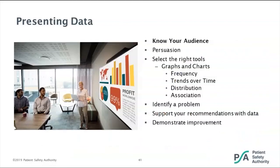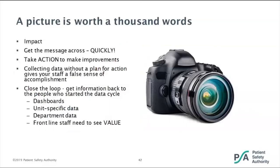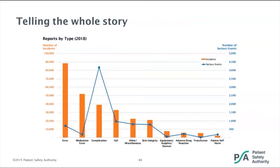When presenting your data, know your audience. Make it as simple as possible. What are you showing — frequency, changes over time, relationships? Explain what your problem is, what you're recommending to focus on, what changes you're recommending, and support it with data. Get as much as you can into a picture as quickly as possible. If you have dashboards, compare units side by side. Pulling from our annual report, this shows a breakdown of reports by type — incidents and serious events — in one picture. The Pareto chart makes it clear: errors from procedures is number one for incidents; complications is number one for serious events.